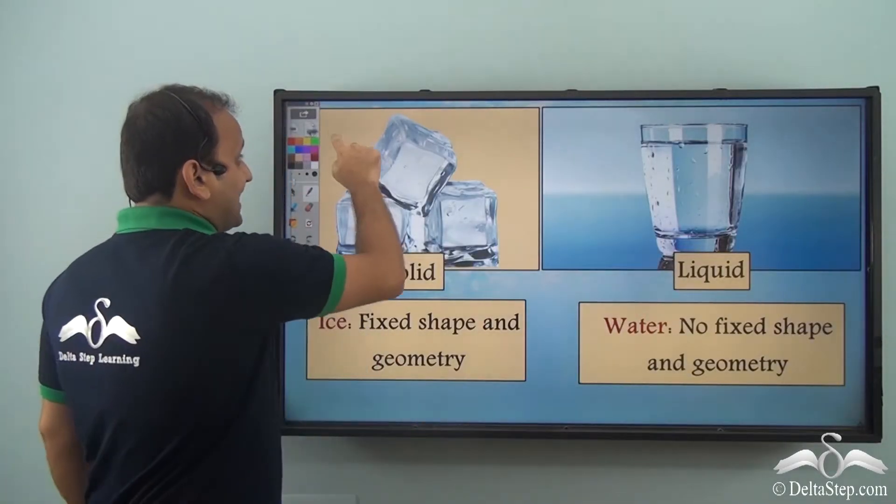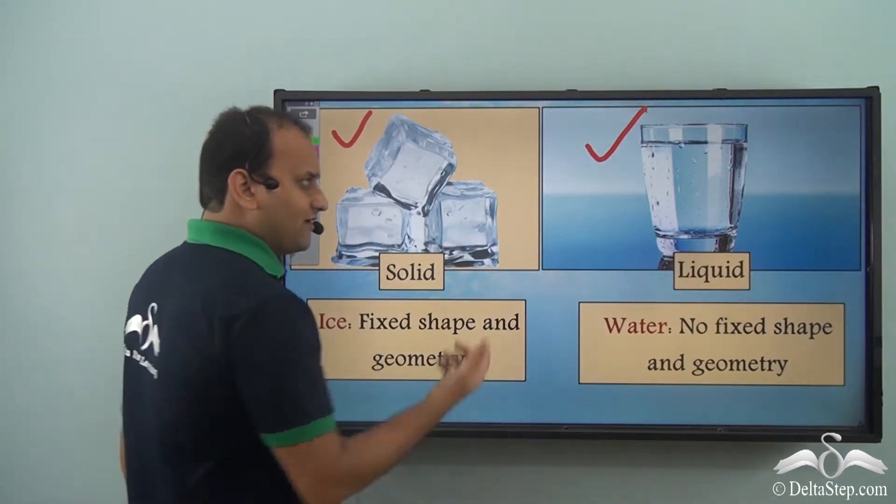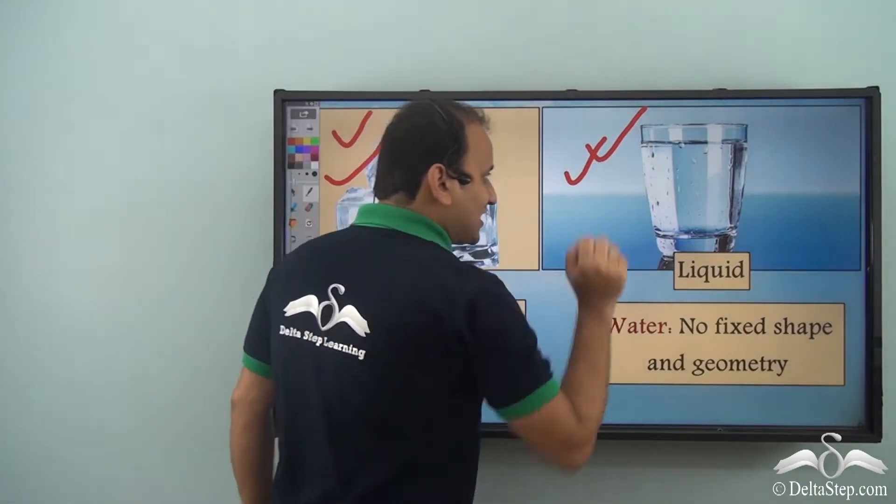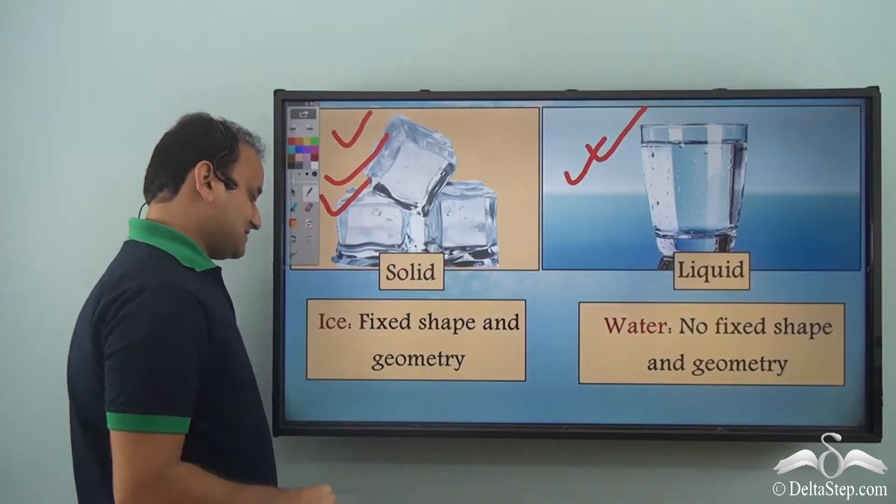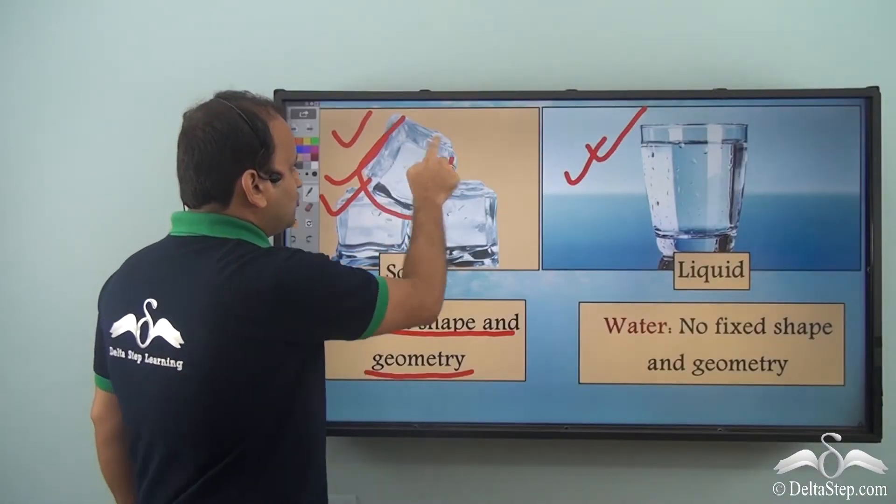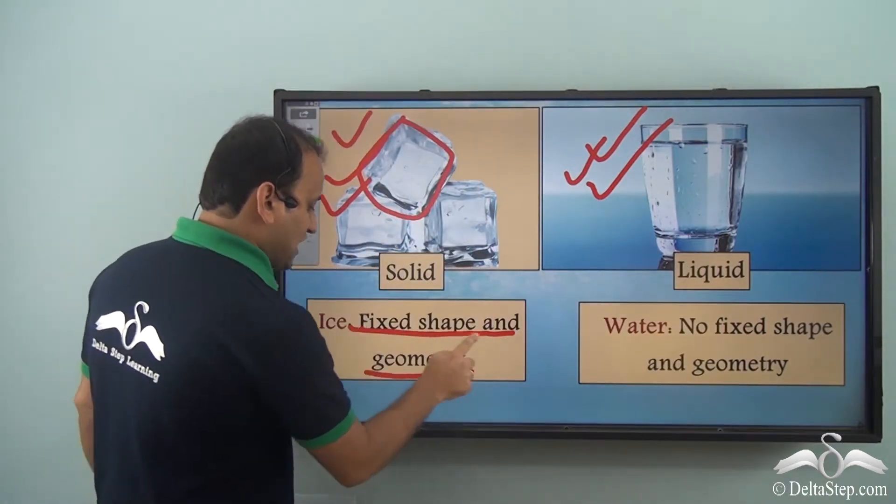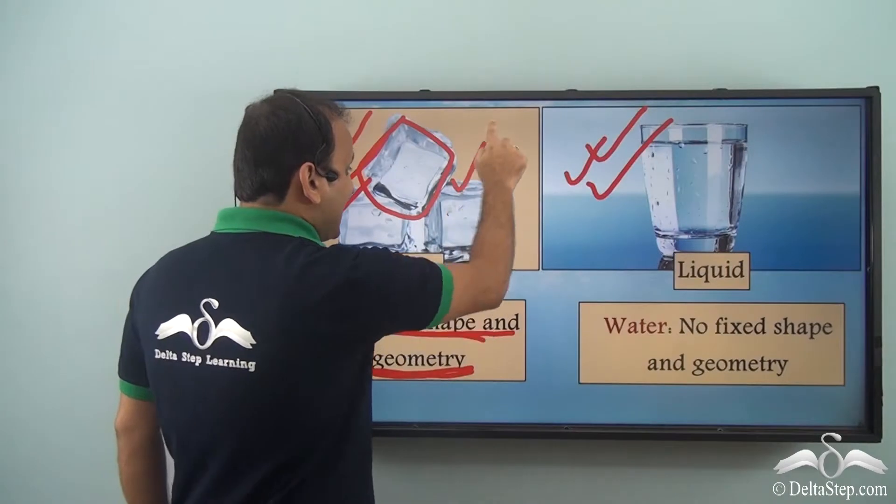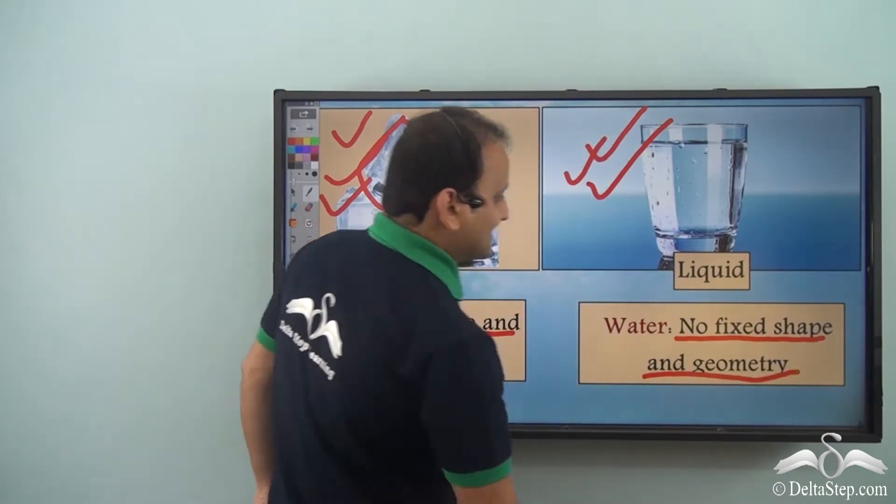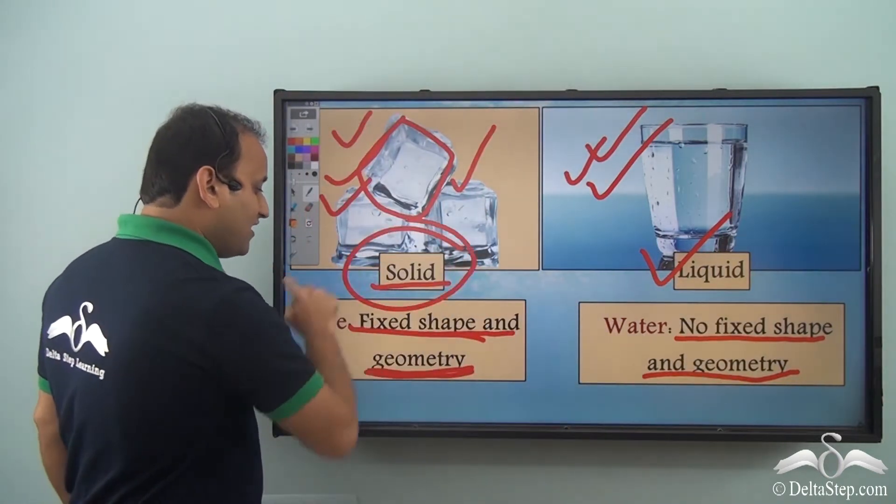If I compare ice to water, both are forms of water itself. This is the liquid form and this is the solid form. And why is this solid and this liquid? Because when we talk about ice, it has a fixed shape and geometry. You see it is sort of a cubic shape, while water has no shape of its own. So fixed shape and geometry is what defines ice as a solid, while water has no fixed shape and geometry. That is why it is not a solid—it is a liquid.